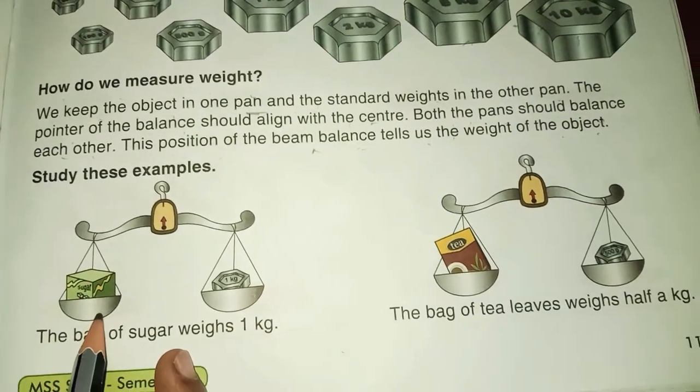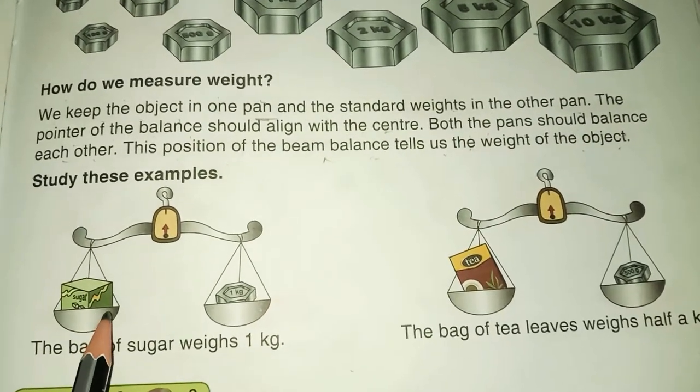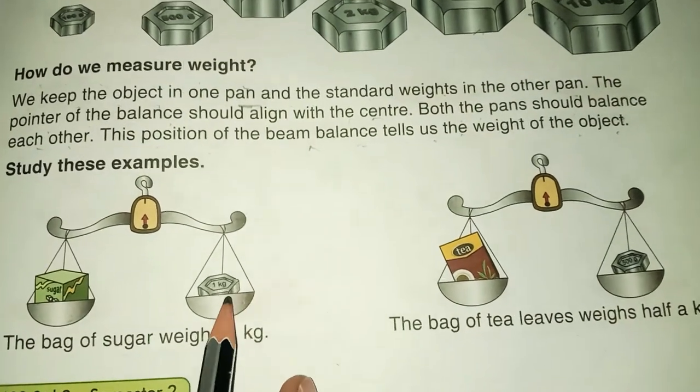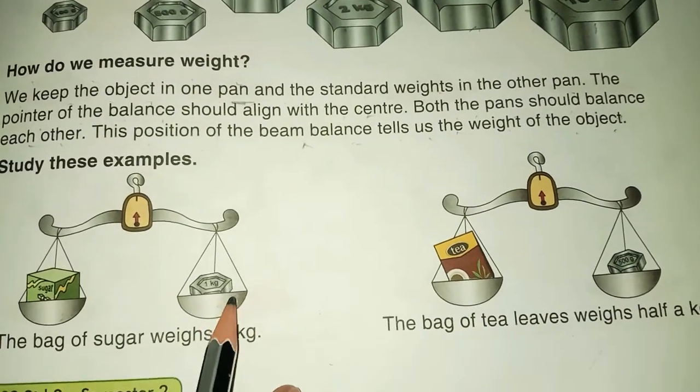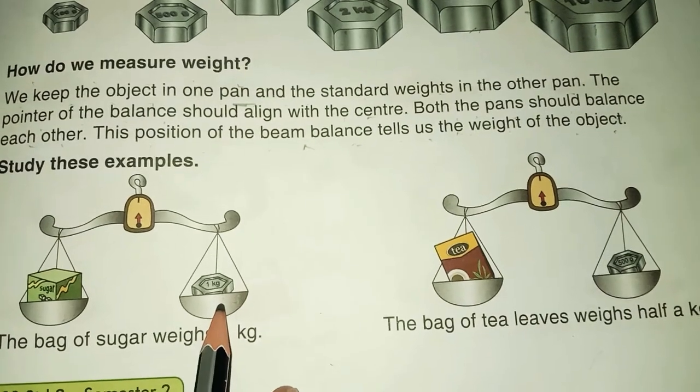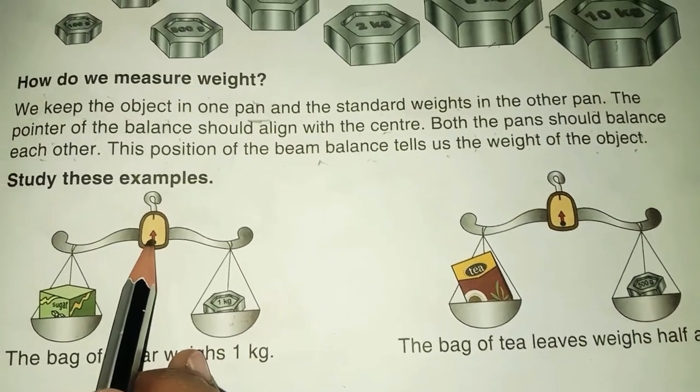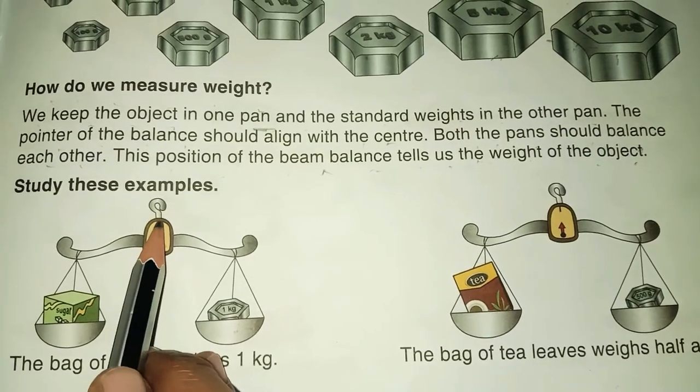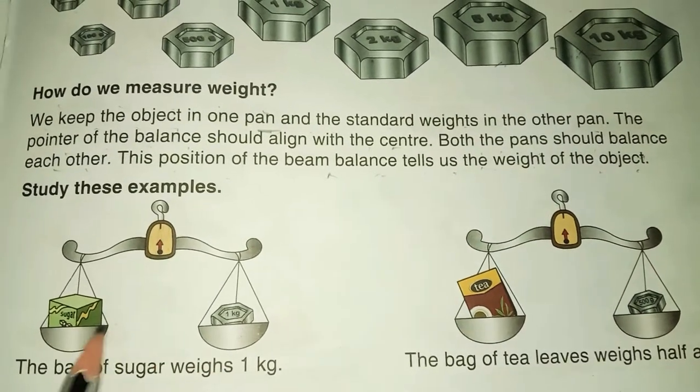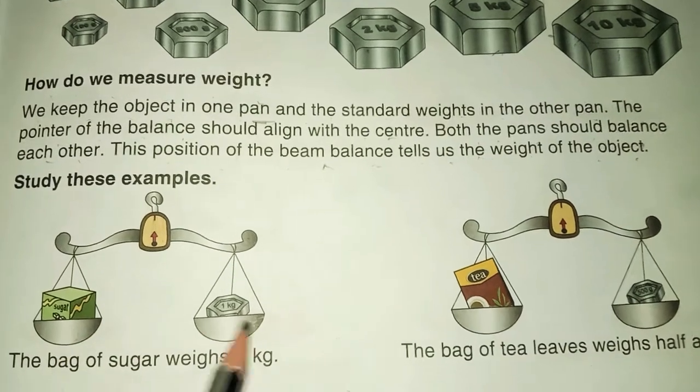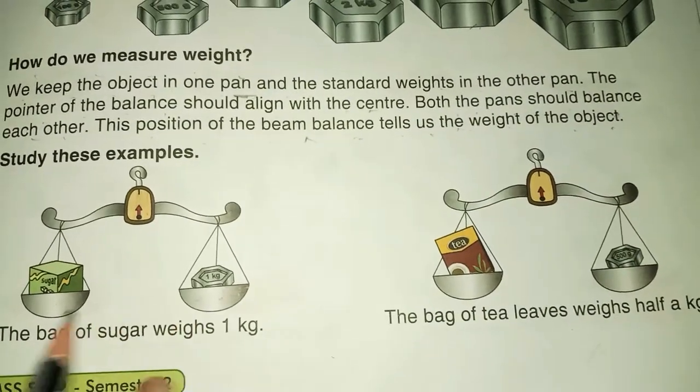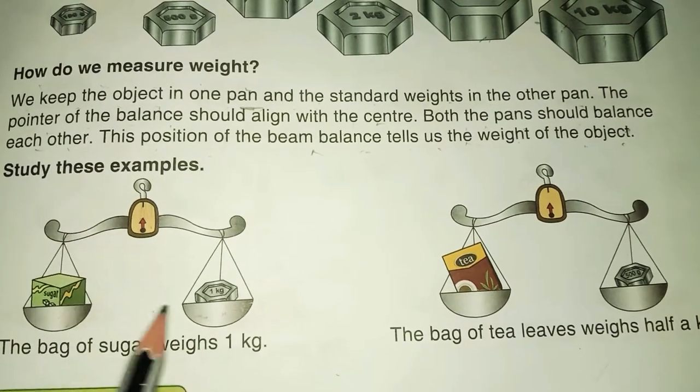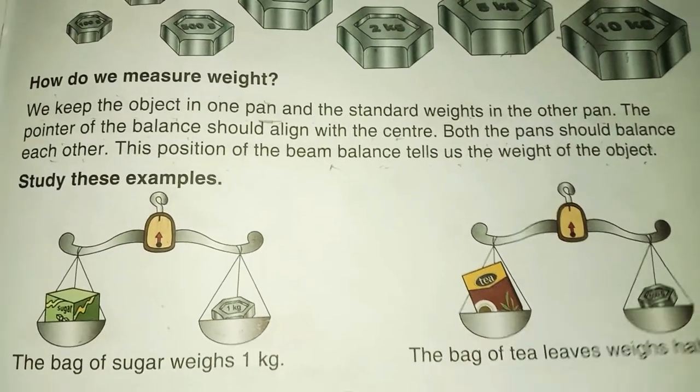Keep the object in one pan and keep the standard weights in the other pan. The pointer of the balance should align to the center. Both the pans should balance each other. This position of beam balance tells us the weight of the object.